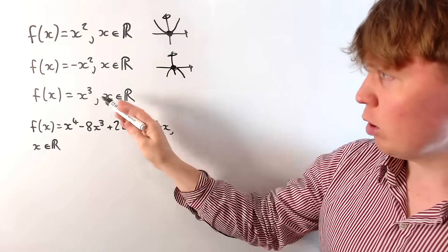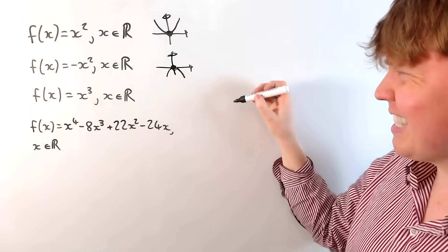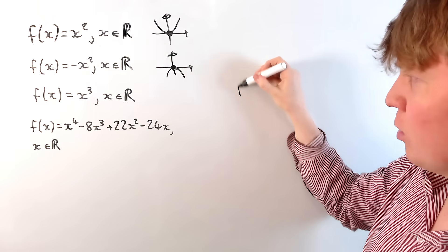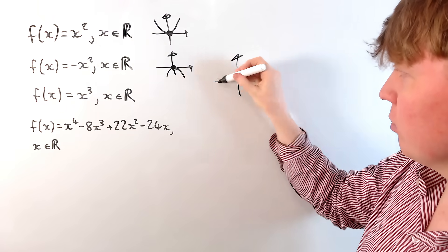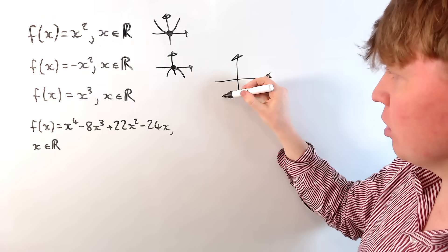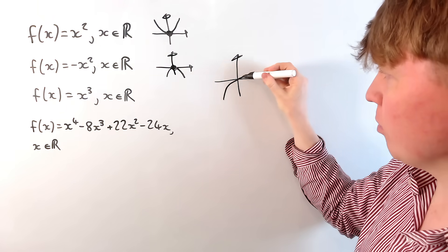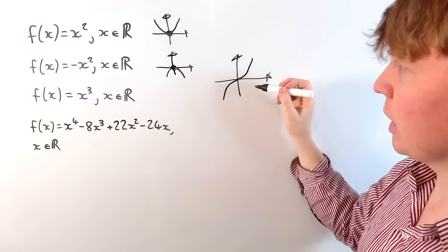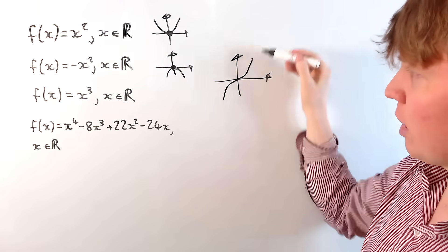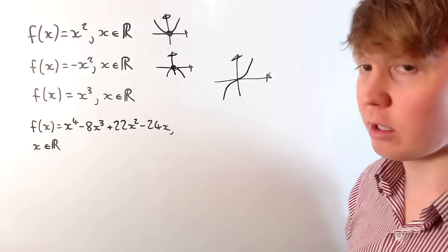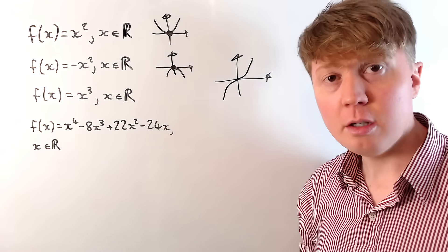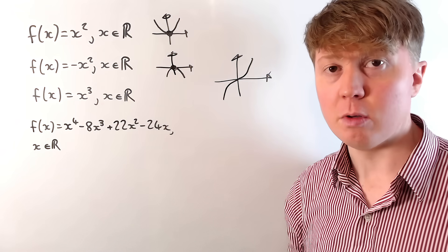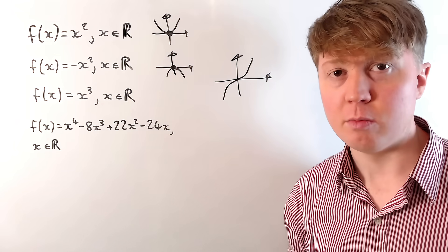If we go to f(x) = x³, this is an example of a function which actually doesn't have a minimum or a maximum — it just keeps getting bigger and keeps getting smaller, so there is no minimum and there is no maximum.